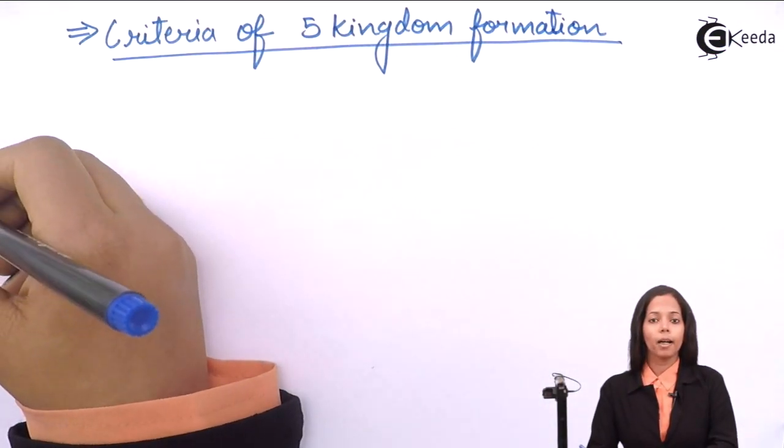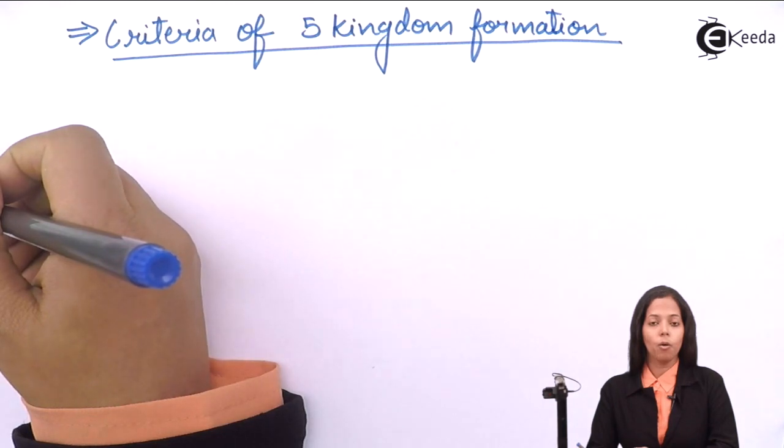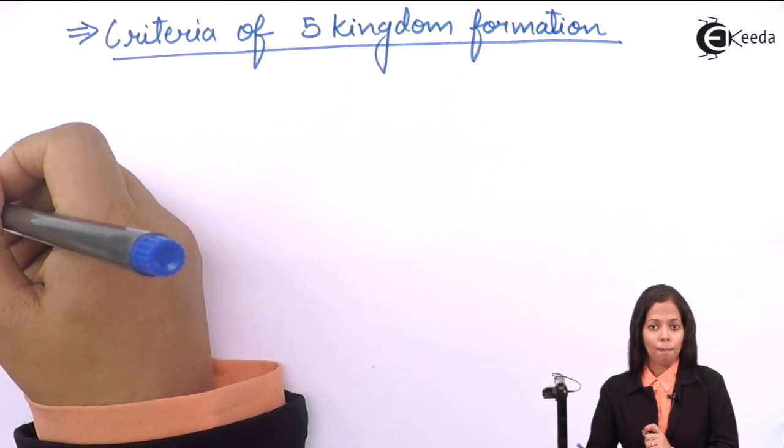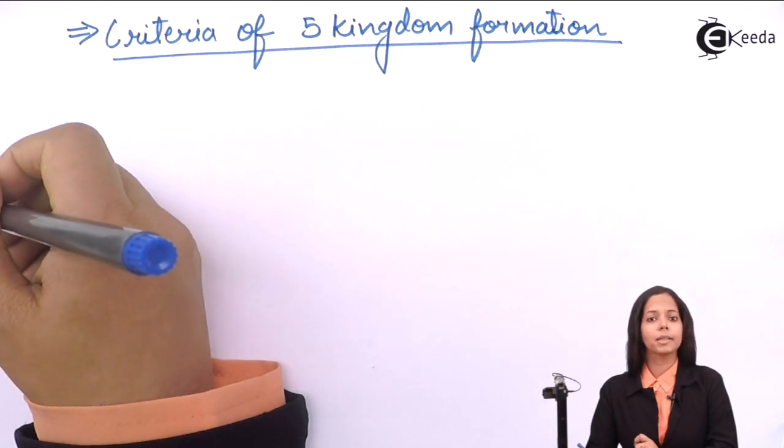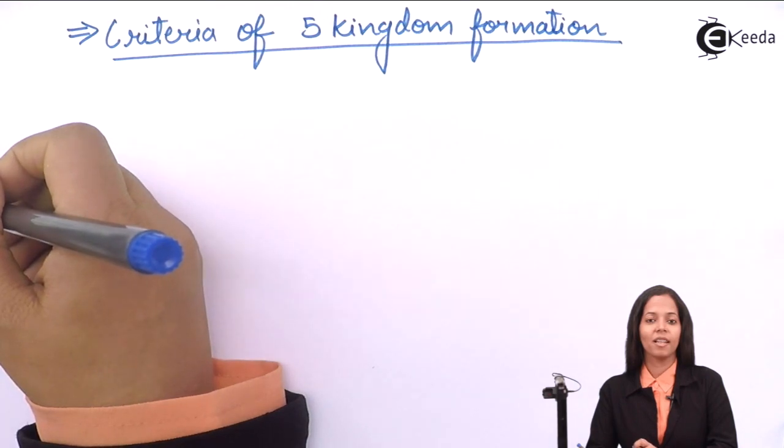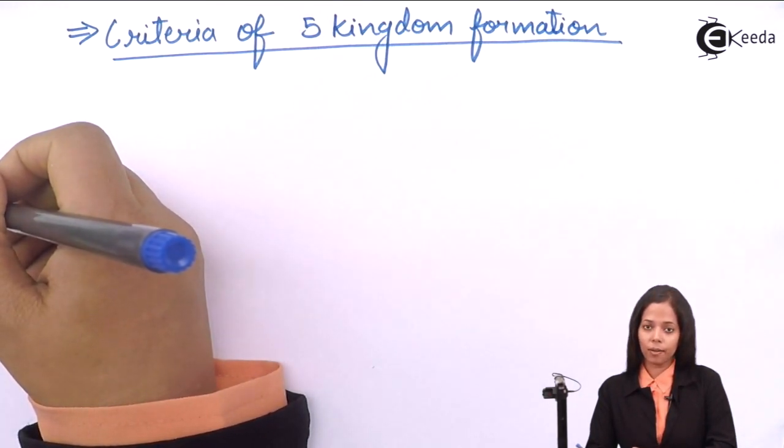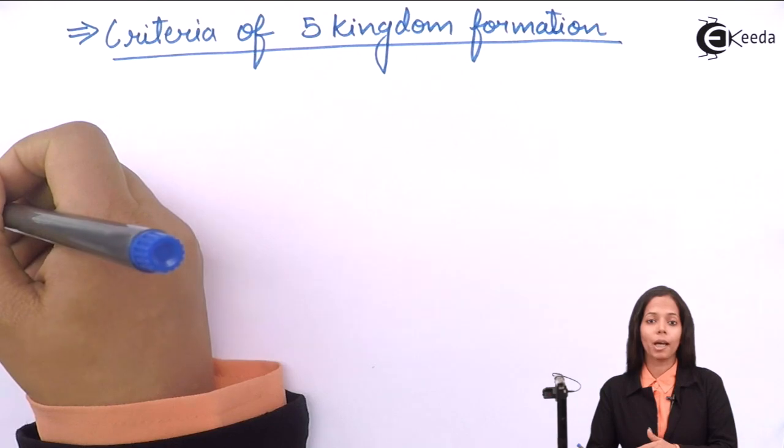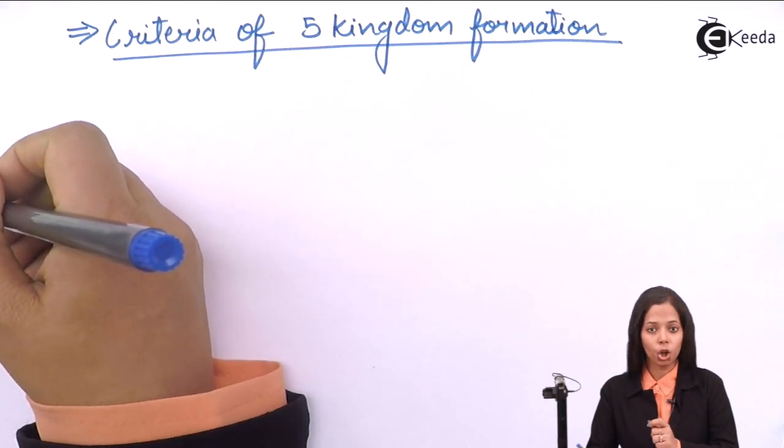The first criteria used by R.H. Whittaker was cell organization. By the word cell organization, he means the type of cell. What are the two types of cell we have studied? Prokaryotic and eukaryotic. So on the basis of prokaryotic and eukaryotic, he has formed the group.